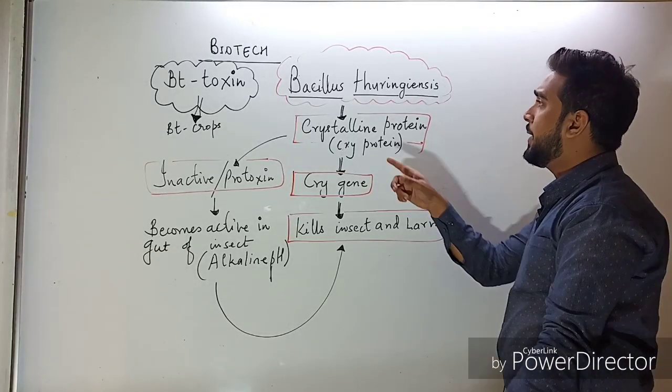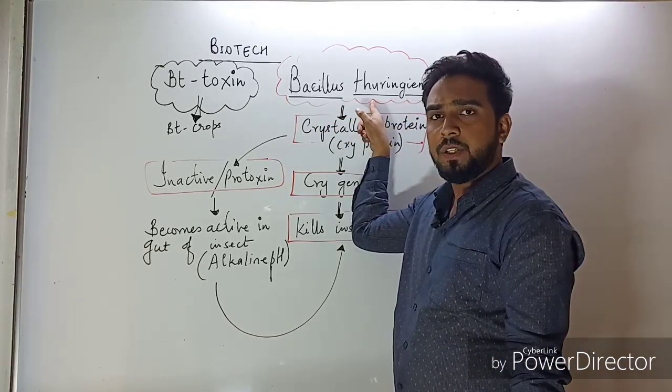Whenever an insect or larva starts eating the surface of the leaf, this protein gets mixed with the material it ingests. As the protein reaches the gut of the insect, the pH in the gut is alkaline, and because of that alkaline pH, the respiratory system of the insect is blocked and the insect is killed.